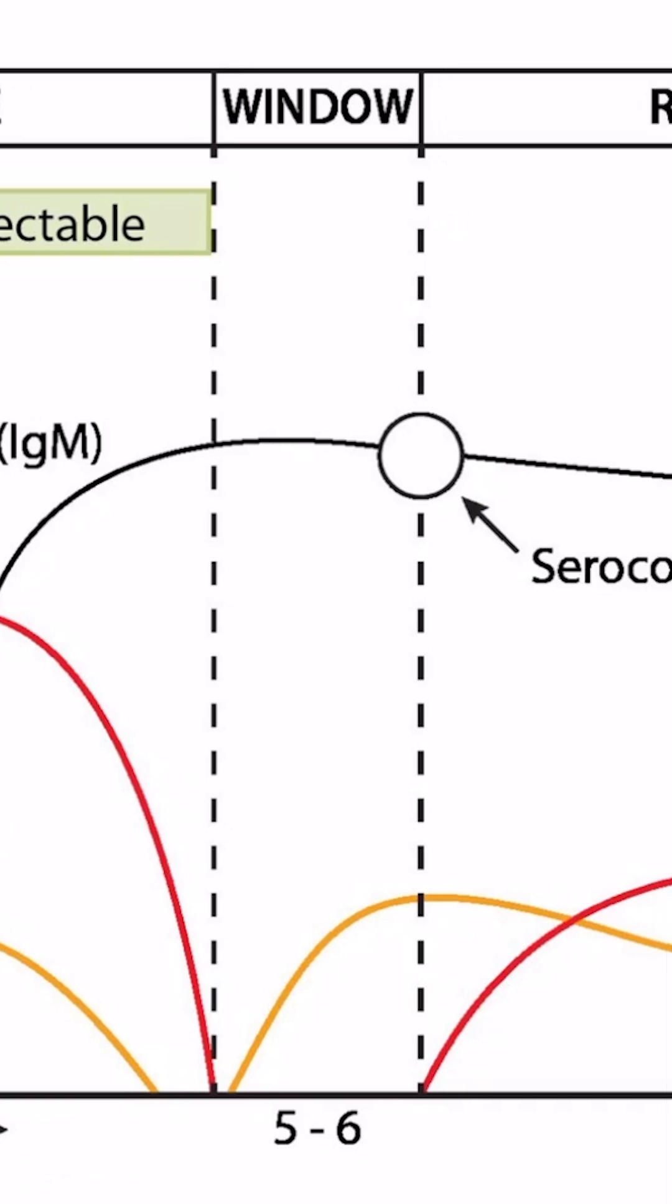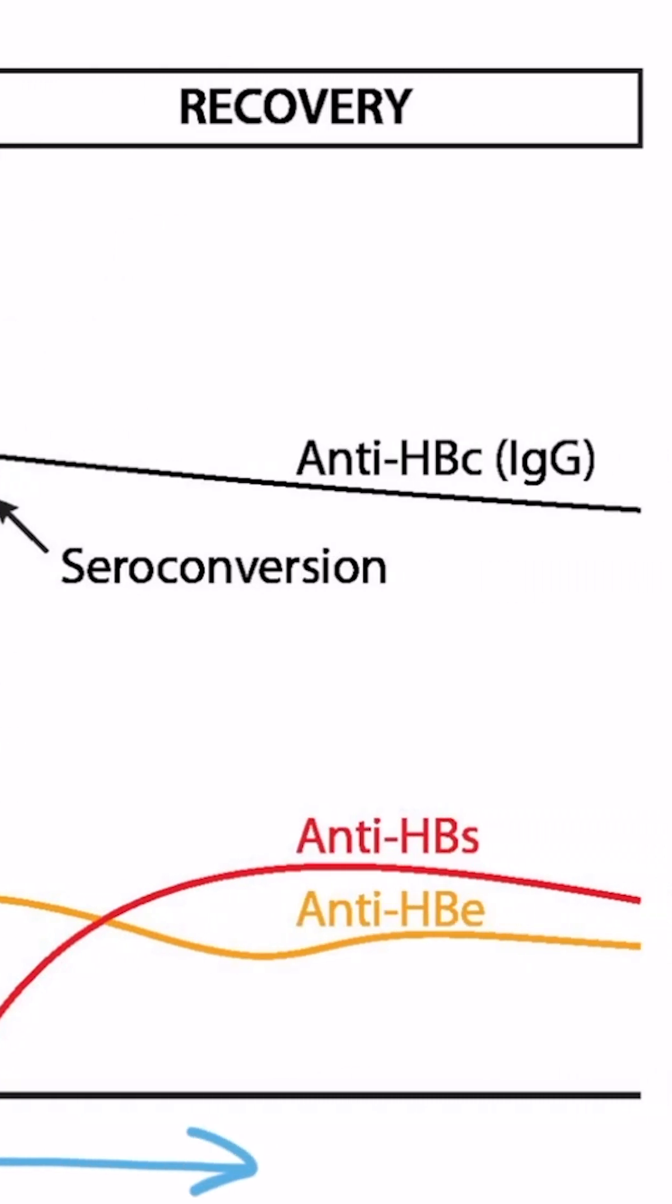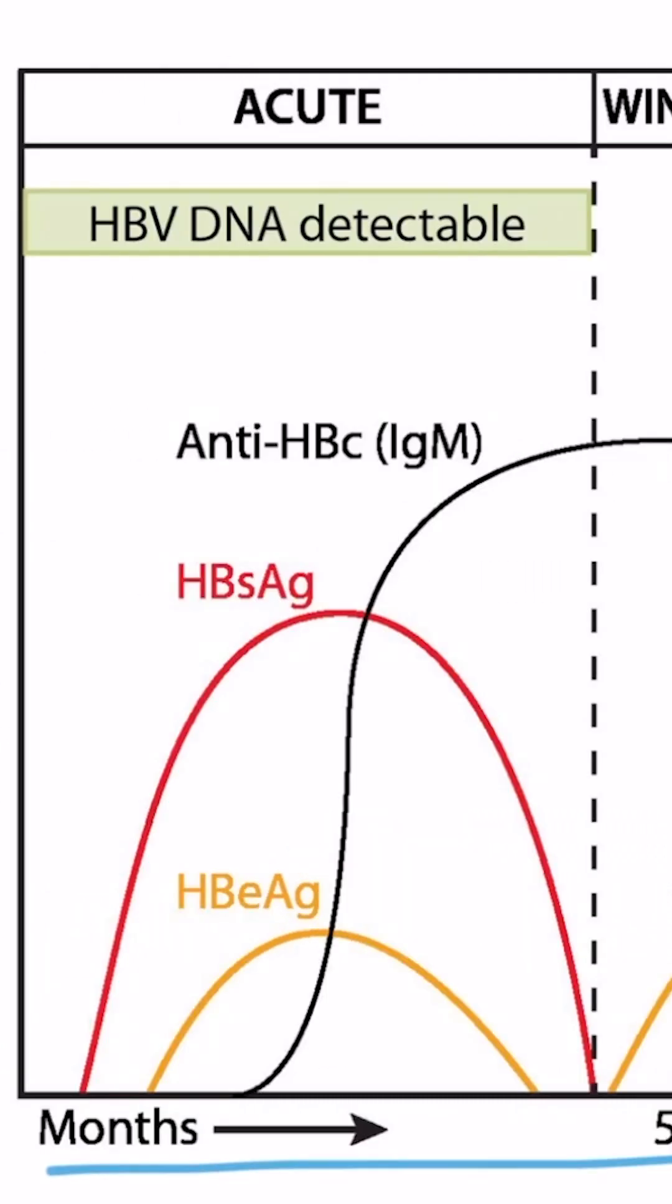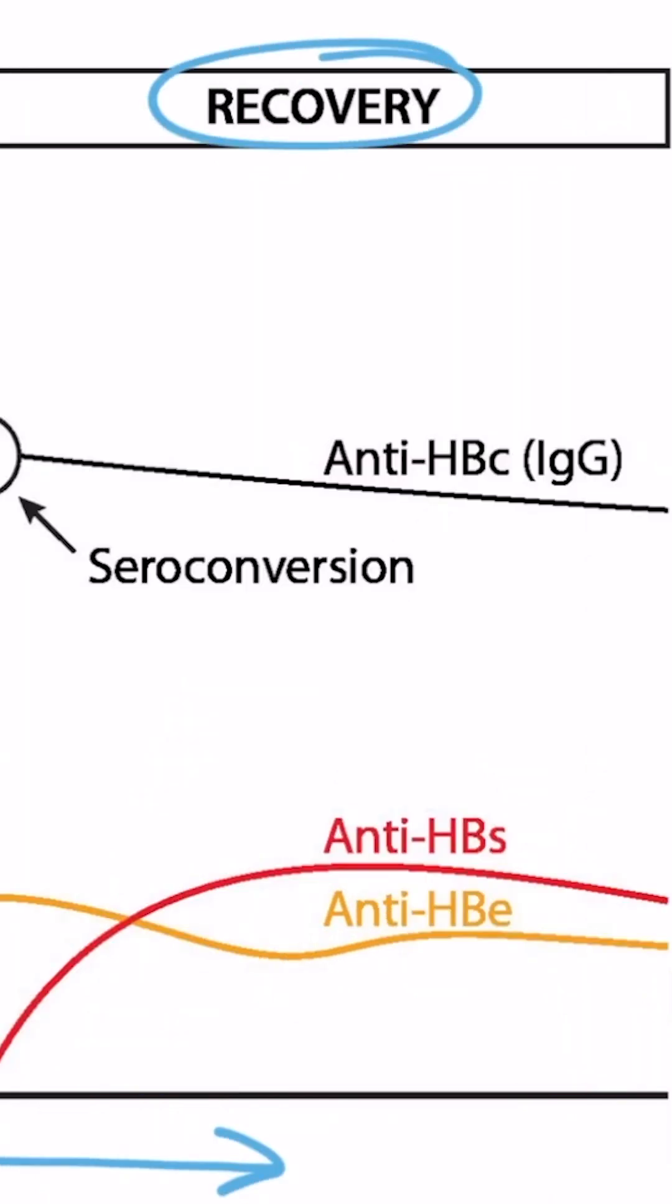Now this diagram shows the level of serologic markers over time. This is specifically referring to someone who clears and recovers from the infection. So they have an acute infection, and then they recover. So this diagram does not depict patients that experience chronic infection. And you may find this diagram in several of your review books, but just know that this diagram is not referring to chronic patients.